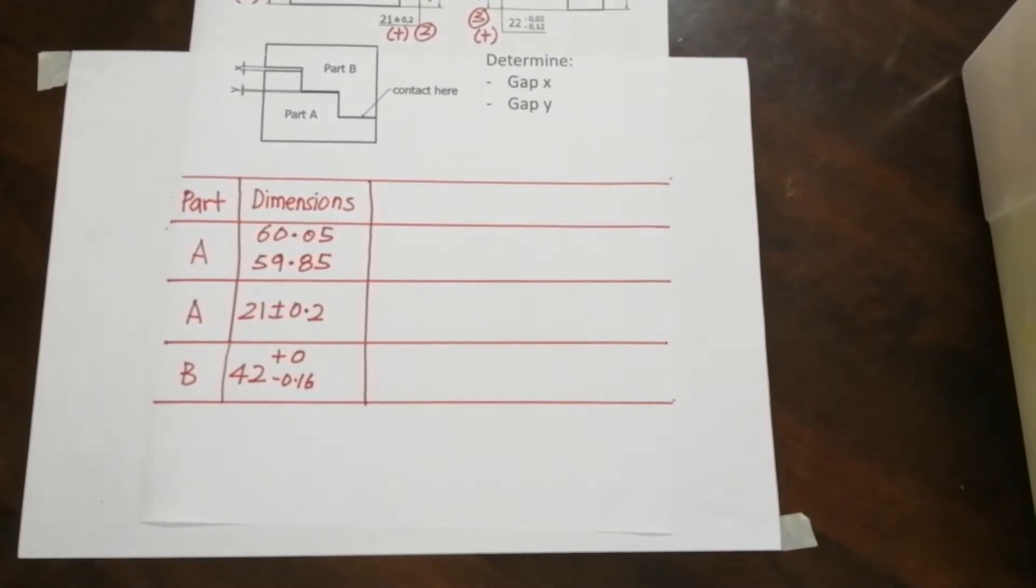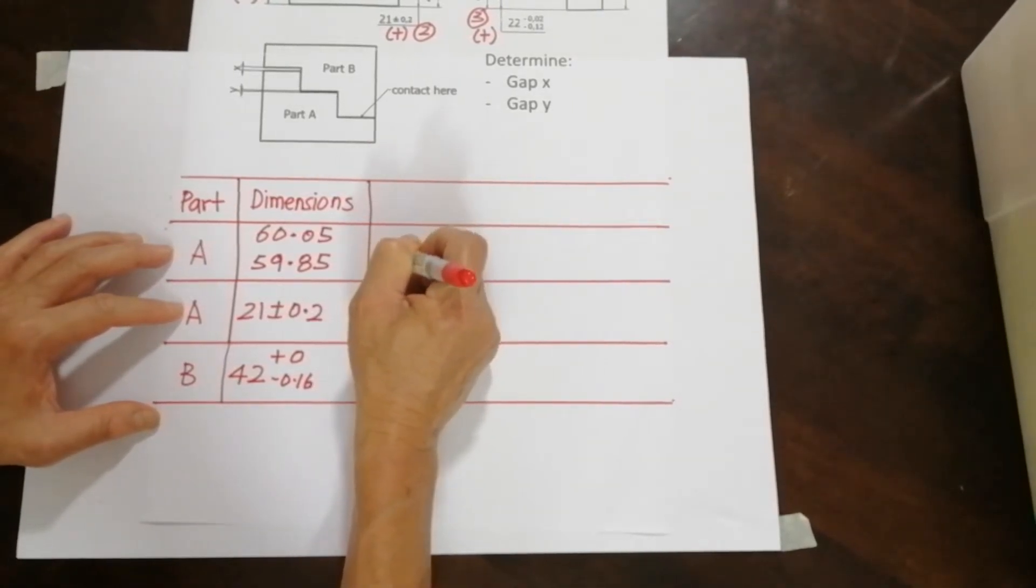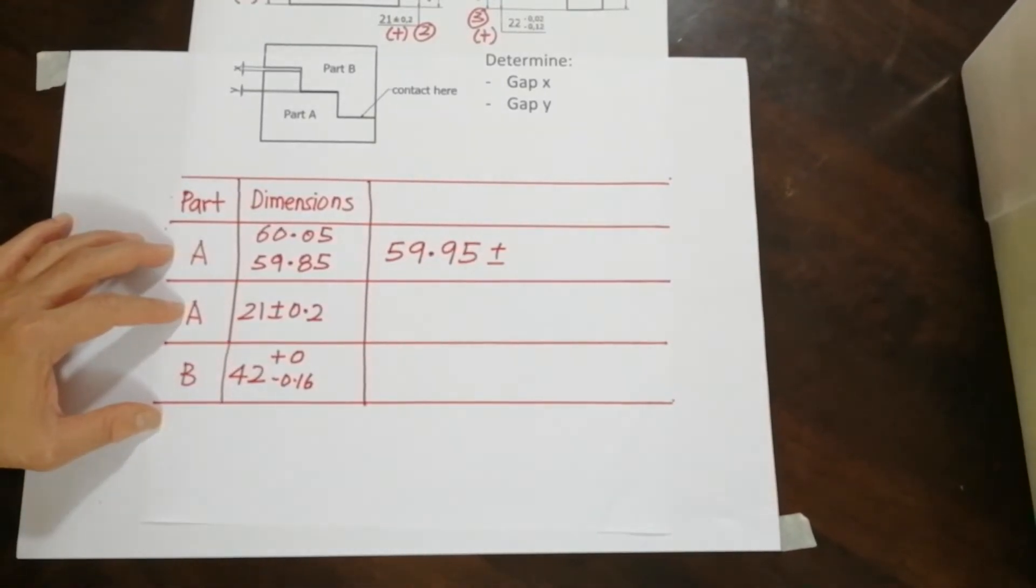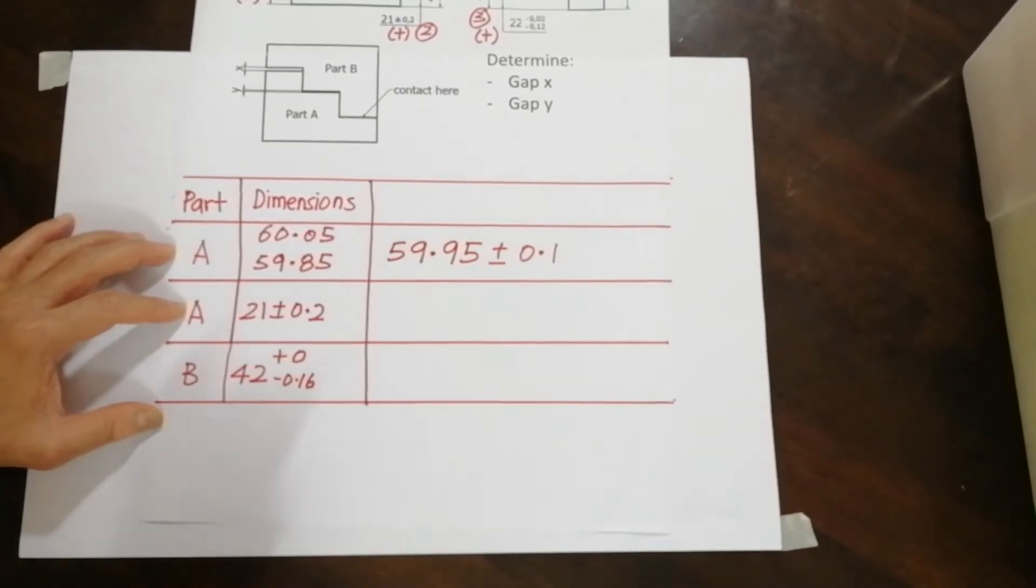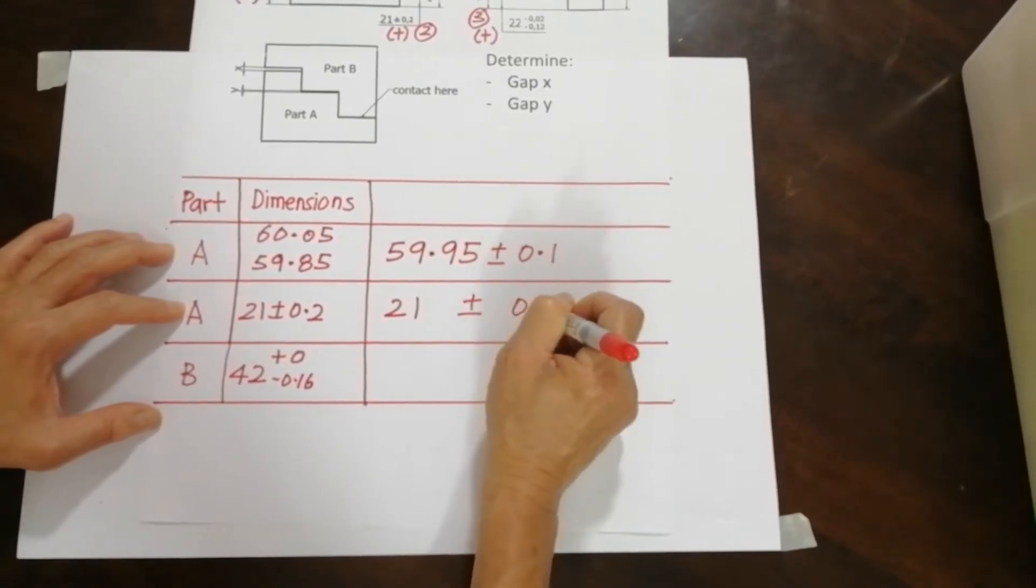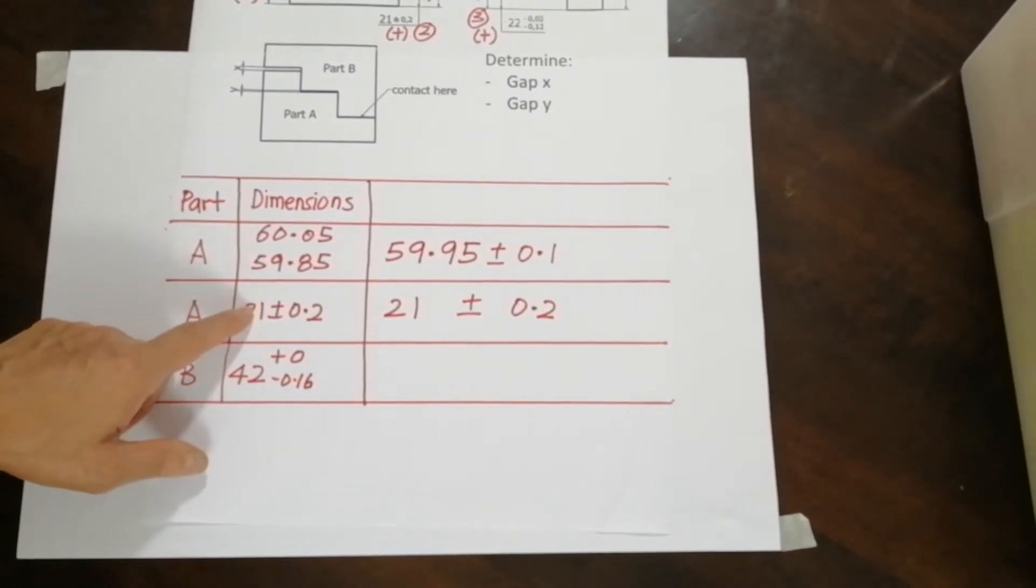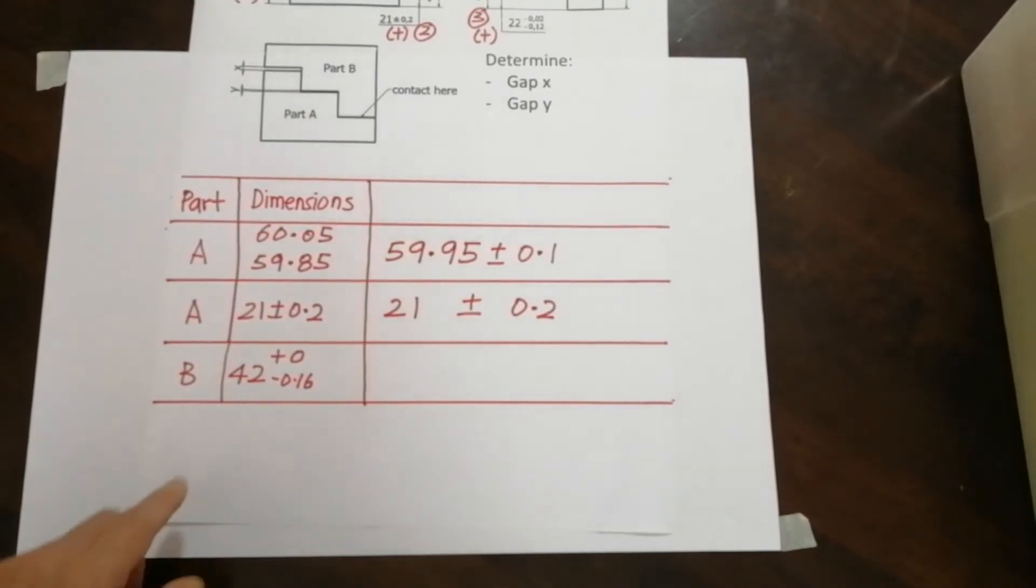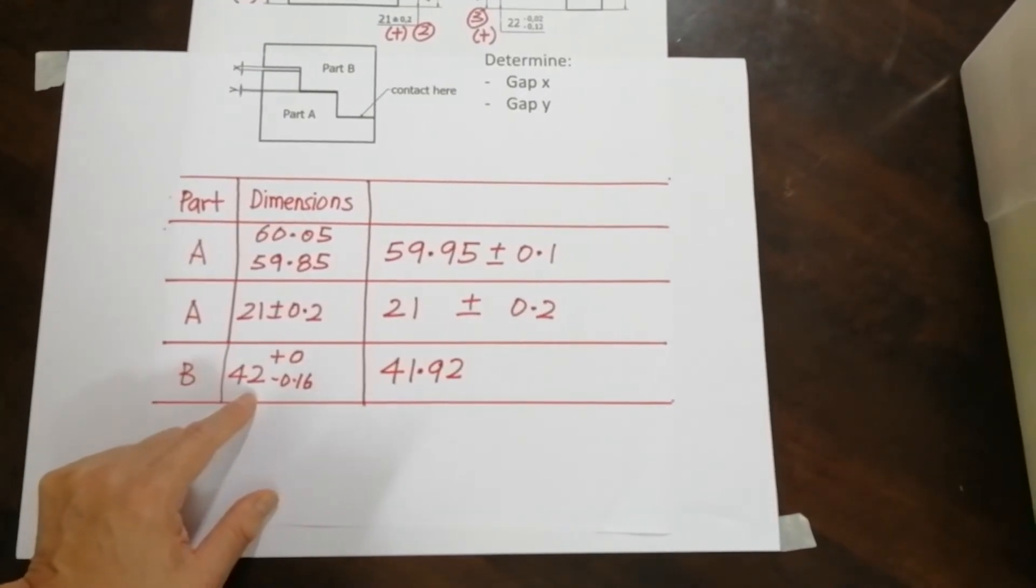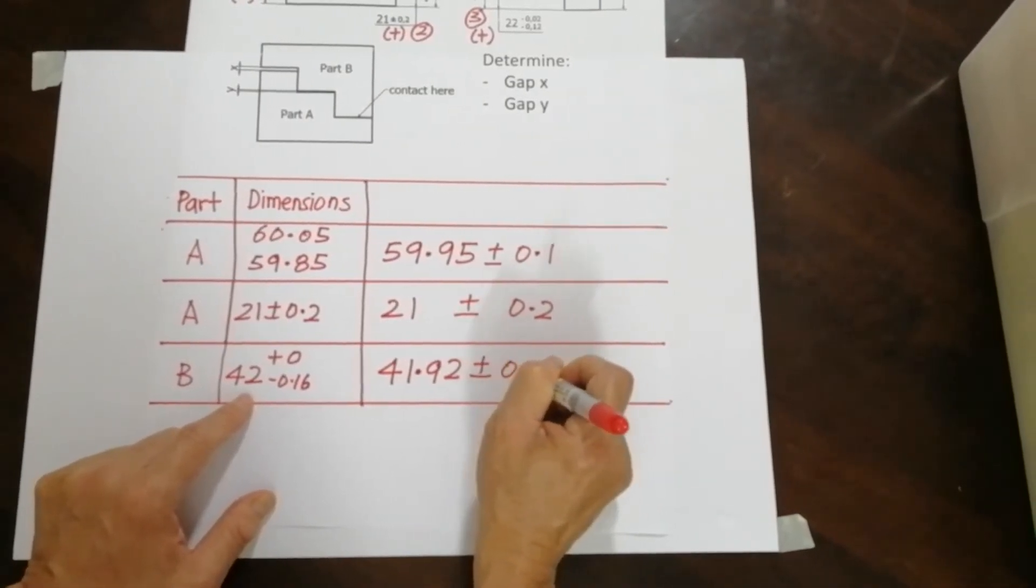Now, using the method that we had earlier, we need to normalize it. And what I get from here is this value I will have 59.95 plus and minus 0.1. Second value is similar, no need to do anything, plus and minus 0.2, because it's already normalized. It's bilateral equal tolerance. So it can just bring over. This one will be 41.92 plus and minus 0.08.